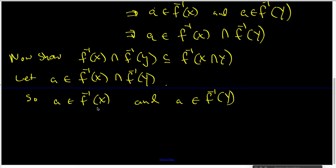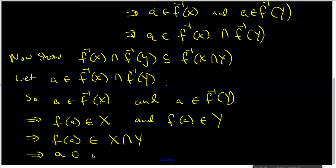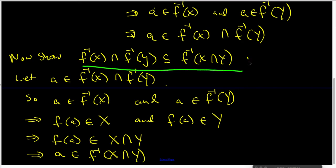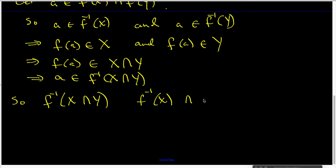A being inside the pre-image of X says f(a) belongs to X, and a being inside the pre-image of Y means f(a) belongs to Y. Together, that says f(a) belongs to X∩Y. But f(a) belonging to X∩Y says a is indeed part of the pre-image of X∩Y, so the second inclusion is done. We can now conclude that the pre-image of X∩Y and the pre-image of X intersected with the pre-image of Y are indeed the exact same set.